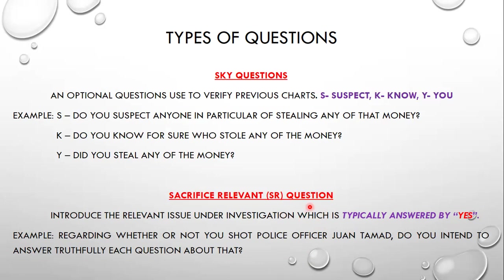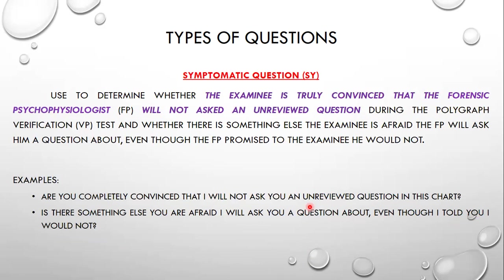Another type is the symptomatic question, used to determine whether the examinee is truly convinced that the forensic psychophysiologist or polygraph examiner will not ask an unreviewed question during the polygraph test, and whether there is something the examinee is afraid the examiner will ask about even though promised not to. For example: 'Are you completely convinced that I will not ask you an unreviewed question in this chart?' or 'Is there something else you are afraid I will ask you about even though I told you I will not?'